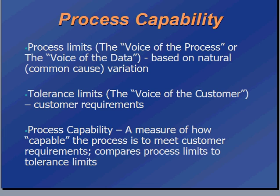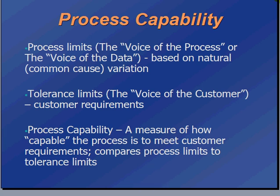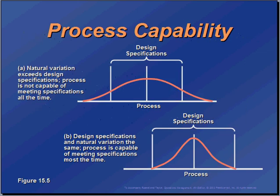How do we measure process capability, and how do we calculate the measures? How can we make sure that we're doing it properly and understanding whether the process that we're working with is actually capable of delivering the type of result that we intend?